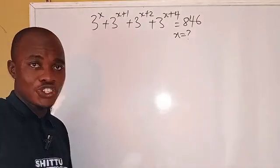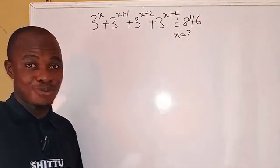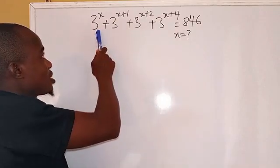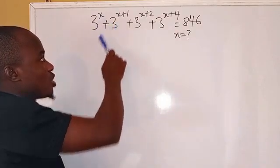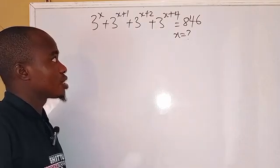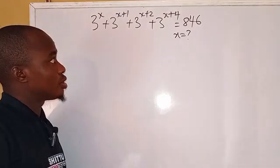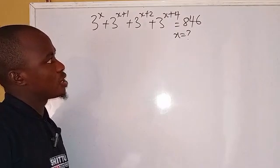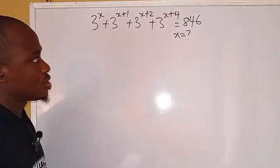Hello, welcome. Let's see how we are going to solve this problem here. This exponential equation: the question said 3 to the power x plus 3 to the power x plus 1 plus 3 to the power x plus 2 plus 3 to the power x plus 4 equals 846.